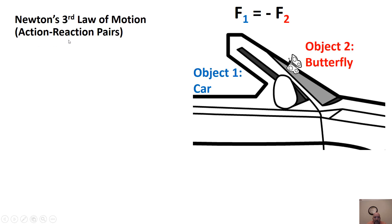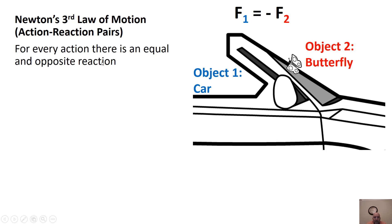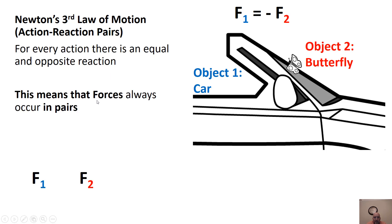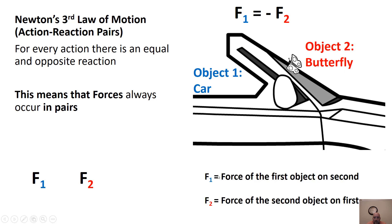The third law deals with action-reaction pairs. We have a pair: the car and the butterfly, each exerting a force. For every action there's an equal and opposite reaction, so forces always occur in pairs. The car pushes on the butterfly, and the butterfly pushes back. The first force is the car on the butterfly; the second, color-coded in red, is the butterfly back on the car.